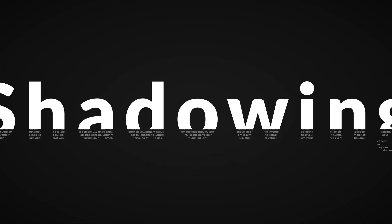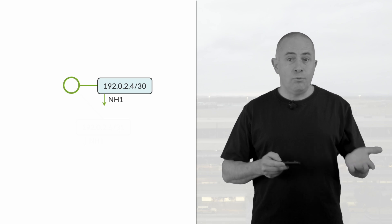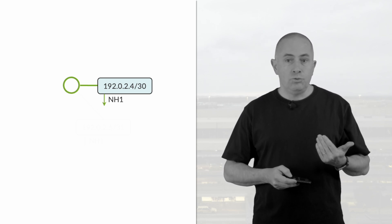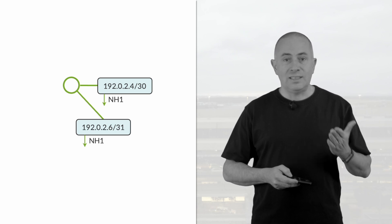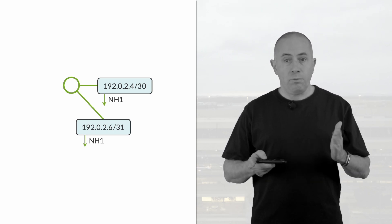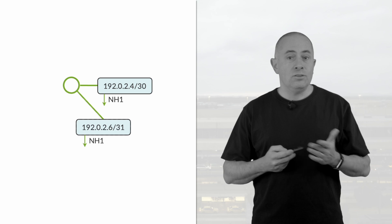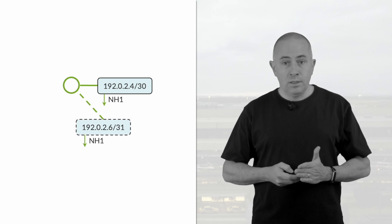The key concepts behind FIB compression are very basic. The first rule is the shadowing principle: if I receive a route with a forwarding behavior similar to an existing superset, it doesn't bring any useful information — I don't program it. For example, if I receive two routes, 192.0.2.4/30 and 192.0.2.6/31, both pointing to NH1, I don't need to program the /31. It will occupy space for nothing.